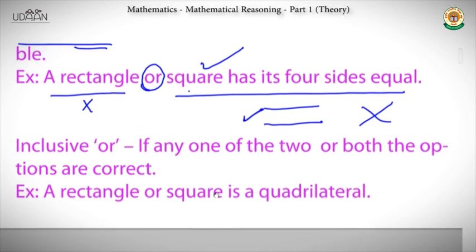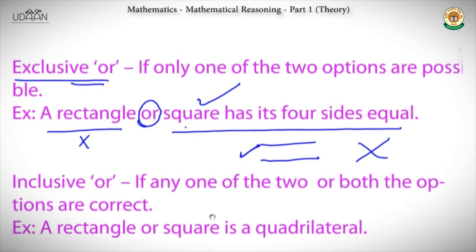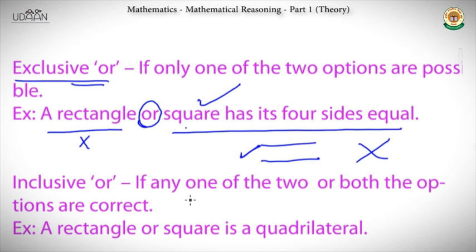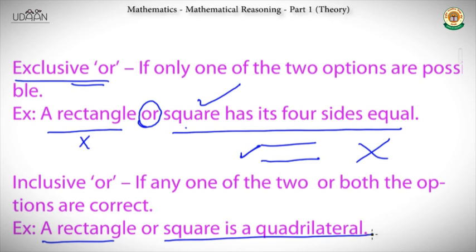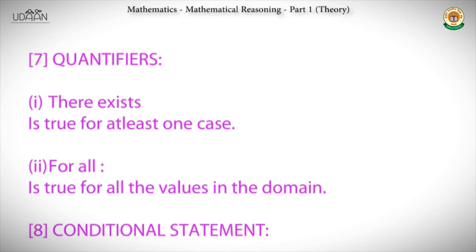Inclusive or means any one of the two or both options are correct. For example: 'A rectangle or a square is a quadrilateral.' Both statements are correct, so this is an inclusive or.